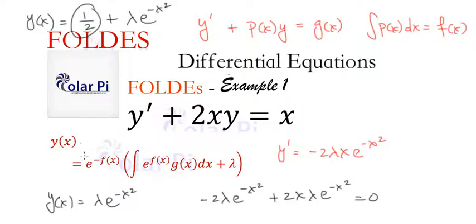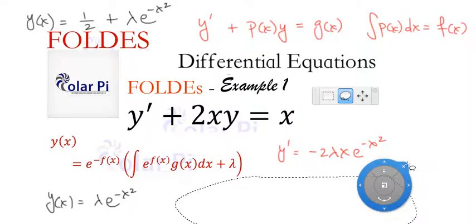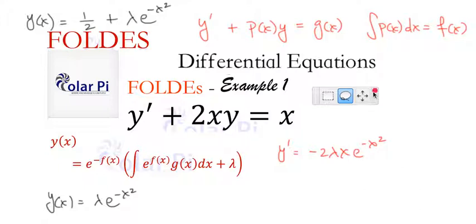So without that one half we'd have the solution to the homogeneous equation, but with the one half we get the solution to the non-homogeneous equation. So I thought that was kind of neat to point out. And also notice that this latter solution we found is what you would get if you plugged in g of x equals zero in our formula. So if that equaled zero then you just get e to the negative x squared times lambda which is the solution to the homogeneous equation where g of x would be zero.